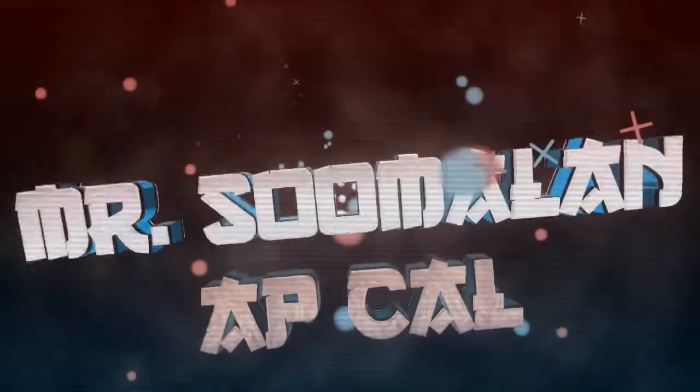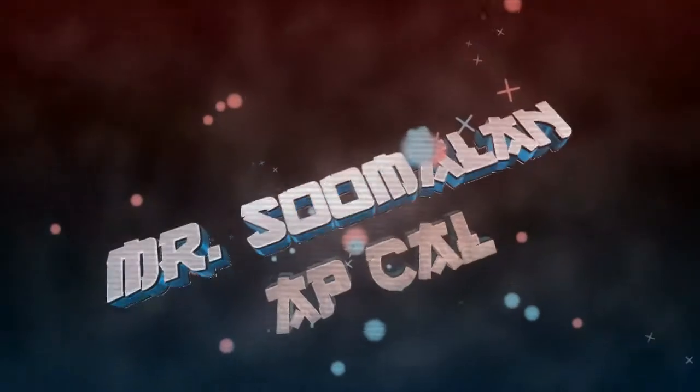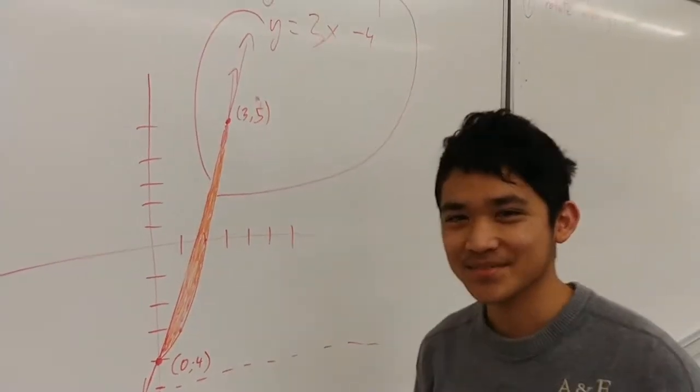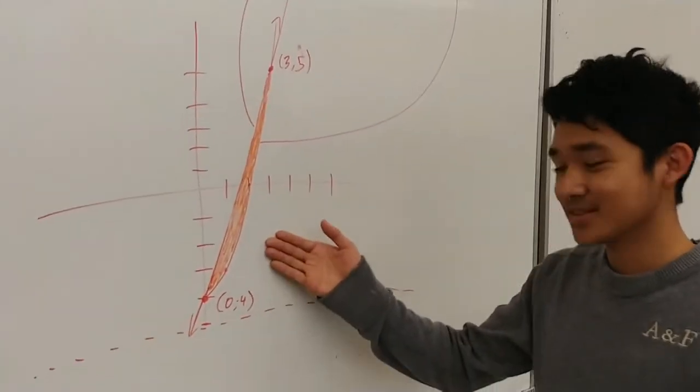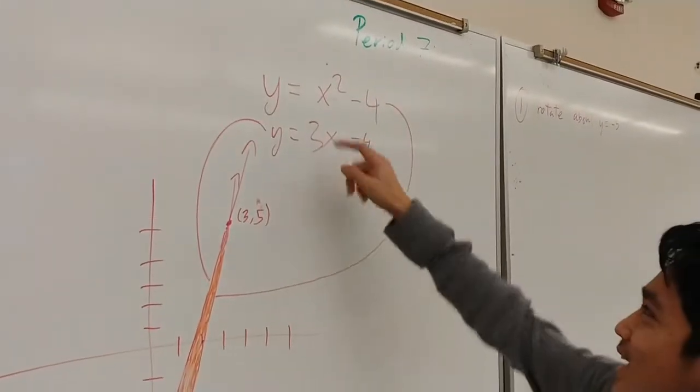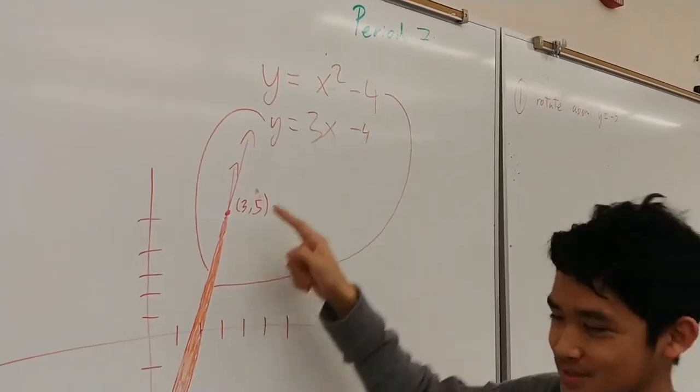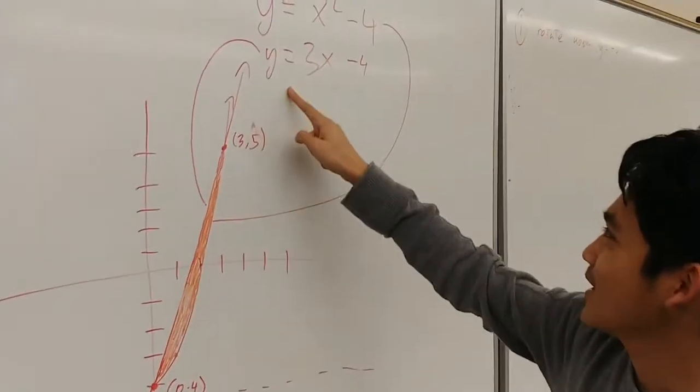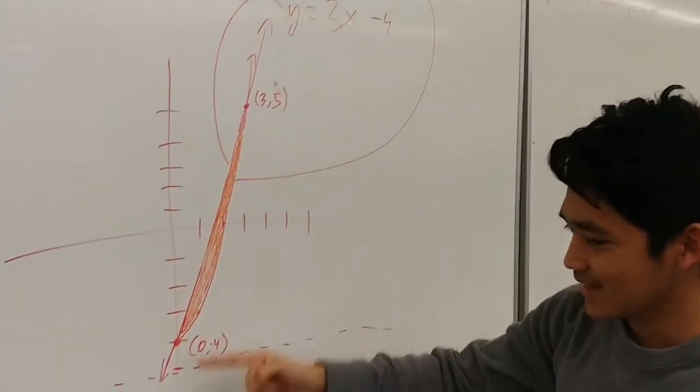Hi, I'm Scott Meander and I'm going to introduce you to this region bounded by these two functions: y equals x squared minus 4, which is this parabola at the bottom, and y equals 3x minus 4, which is the line on the top.